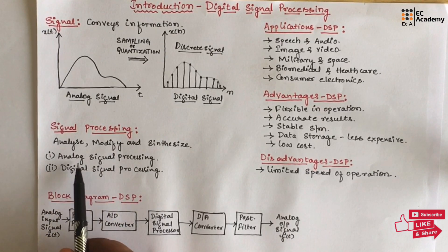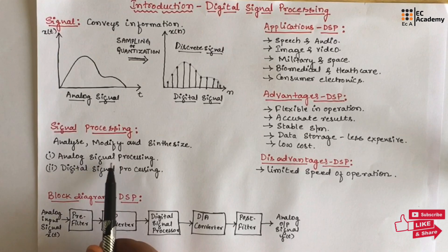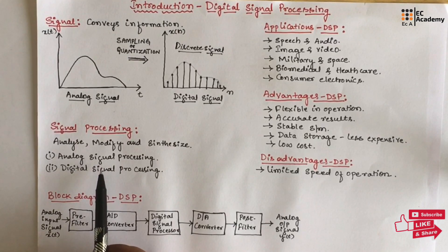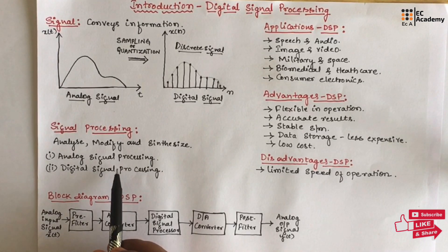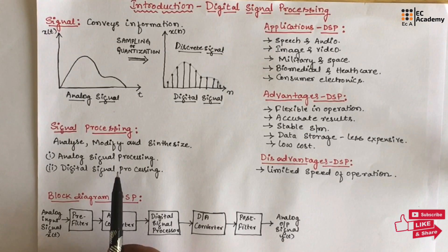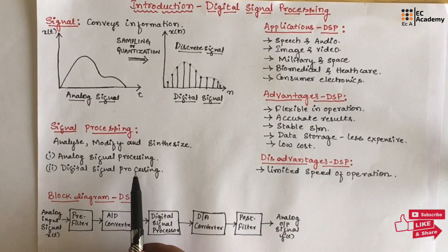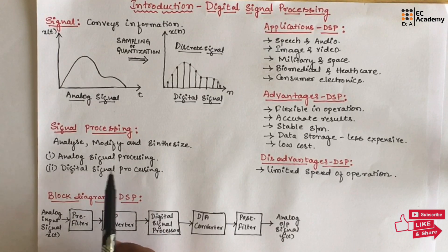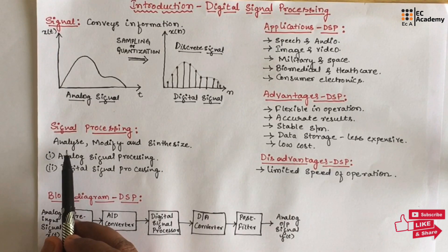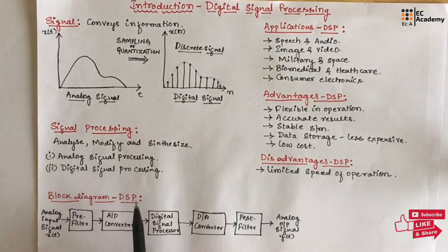In analog signal processing, the signal is processed using an electrical network consisting of active and passive elements. An example for an active element is an op-amp, and for passive elements we have capacitor, resistor, inductor, etc. Using this electrical network, the analog signals are processed in analog signal processing.